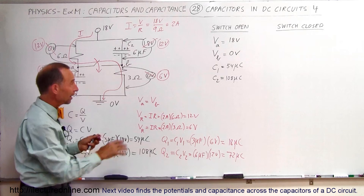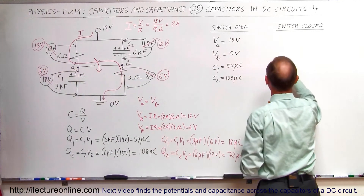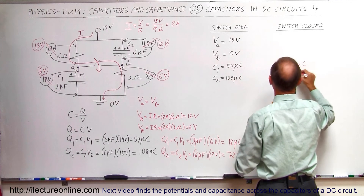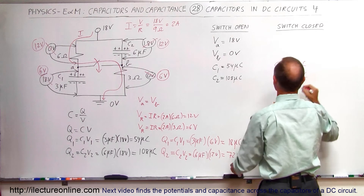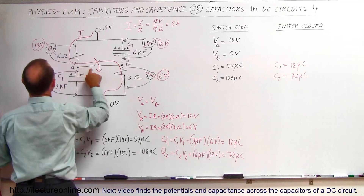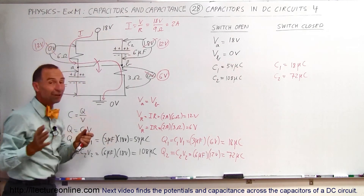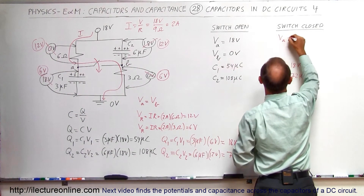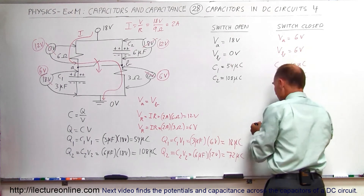Those two capacitors now hold different amounts of charge. Using the new voltage drops: Q1 = C1 × V1 = 3 microfarads × 6 volts = 18 microcoulombs. And Q2 = C2 × V2 = 6 microfarads × 12 volts = 72 microcoulombs. After the switch is closed: C1 = 18 µC and C2 = 72 µC. Since V_A and V_B are at the same potential, with an 18-volt source and a 12-volt drop: V_A = V_B = 6 volts.